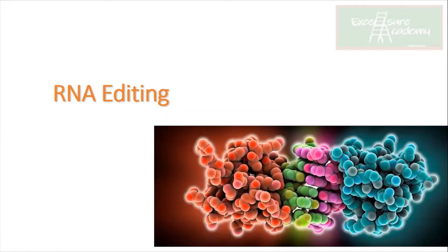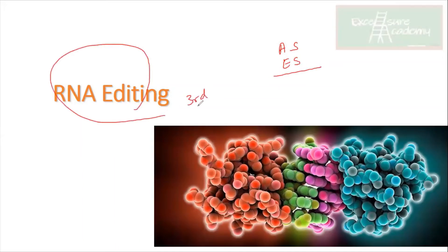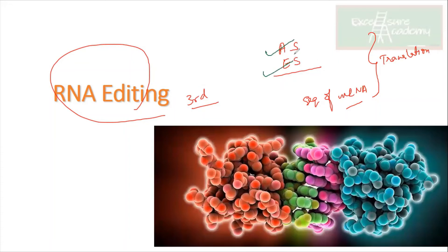This is the last and important topic of RNA splicing: RNA editing. We have discussed how to change gene products through alternative splicing or exon shuffling. RNA editing is a third mechanism by which the sequence of an mRNA can be changed before translation. There are three mechanisms in total by which mRNA sequence can be changed before entering the translation stage.